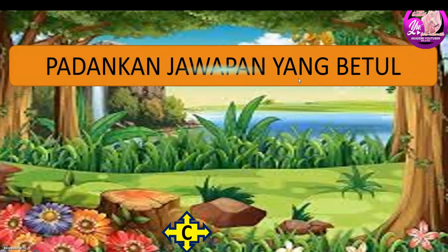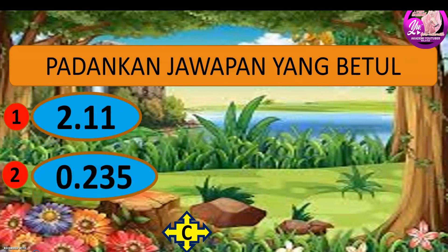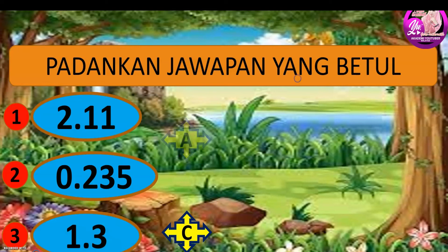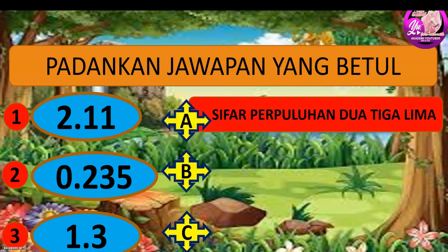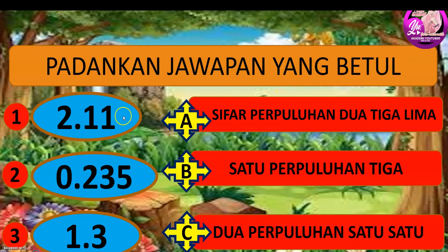Kita lihat soalan padankan jawapan yang betul. Satu: dua perpuluhan satu satu. Dua: sifar perpuluhan dua tiga. Tiga: lima satu perpuluhan tiga. Cuba adik-adik padankan mana satu yang betul antara A, B, C. Nombor satu kita padankan dengan C, nombor dua kita padankan dengan A, dan nombor tiga kita padankan dengan B.